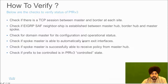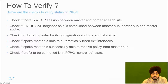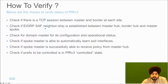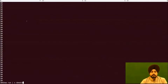Fourth, check if the spoke master is able to automatically learn its exit interfaces — note that exit interfaces are not manually defined at the spoke; they should be discovered automatically if configuration is correct. Fifth, check if the spoke master has received the policy pushed from the hub master. Finally, check the destination prefix traffic state to confirm it is in a 'controlled' state.